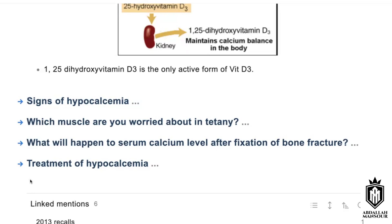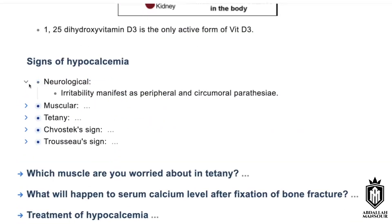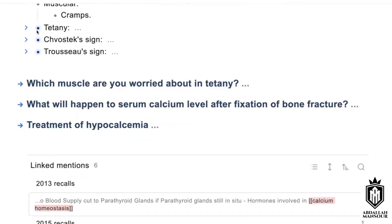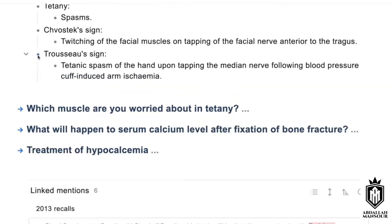Which muscle are you most worried about in tetany? The laryngeal muscles, because of laryngeal spasm — which would, of course, affect respiration and the airway.